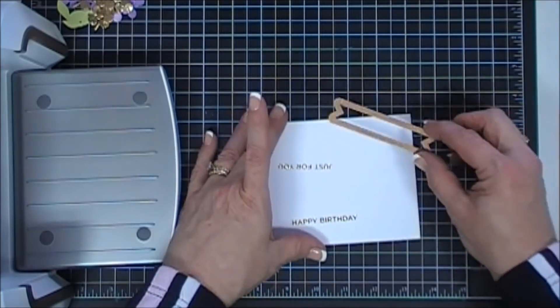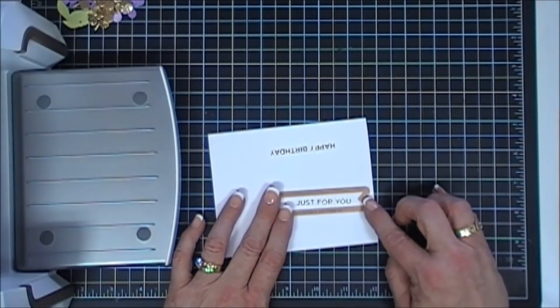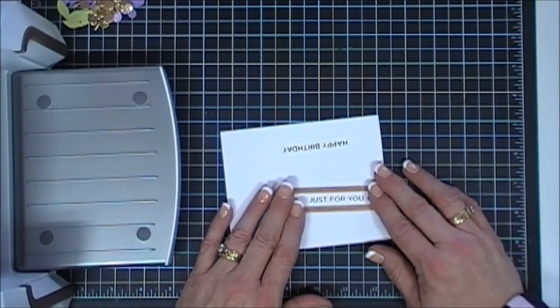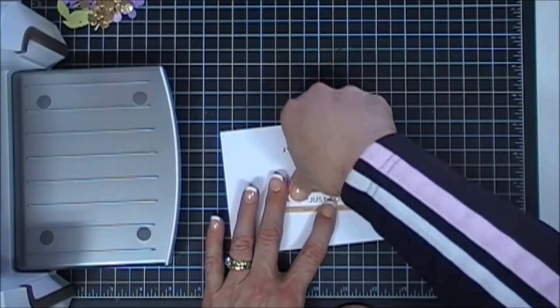There's my happy birthday and my just for you. Now we're going to take the dies that came in this month's kit. We're going to die cut out just for you with the banner die and I'm going to place it a little bit more towards the right, give me a little bit of room on the left. I'll just tape it down.